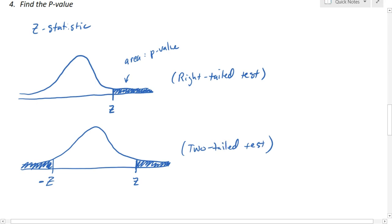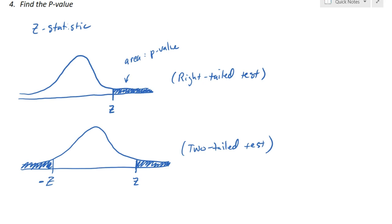If we're using the t statistic, we do the same thing but use the t distribution, which looks similar to the normal curve. Or we might use the chi-square distribution, which looks a little different. But in all cases, we compute our p-value as an area, and which area depends on whether we're doing a right-tailed, left-tailed, or two-tailed test. So how do we interpret the p-value?